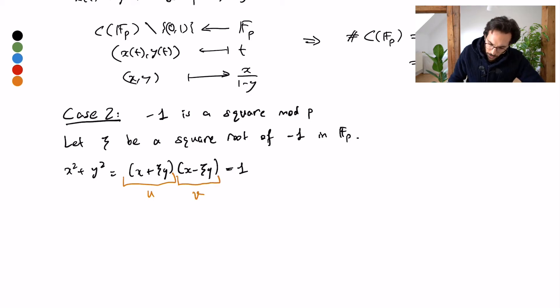Clearly I'm trying to solve for u times v equals one, so neither u nor v can be zero. u and v can be any number in F_p except zero, and then for instance v can be written as one over u. So if I plug in a value of u, the value for v will be determined. So it looks like there are p minus one solutions.